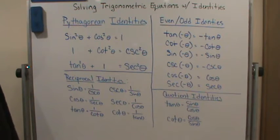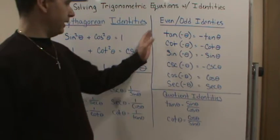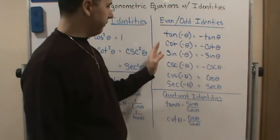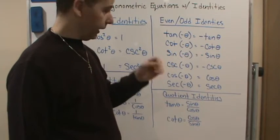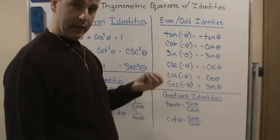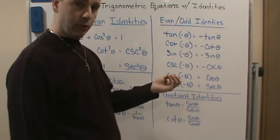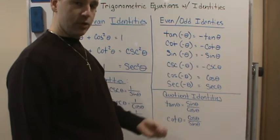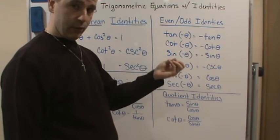And also the reciprocal identities, know those. And then we have the even and odd functions. Remember what even and odd functions do. For example, an odd function is when you put in the opposite value of the domain.